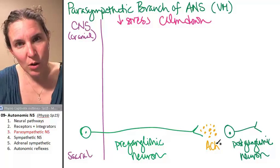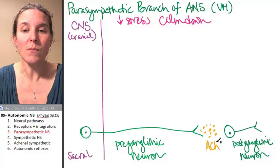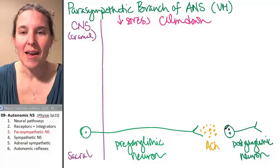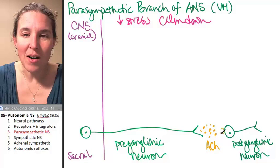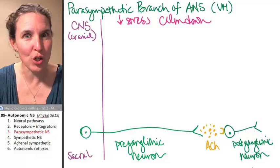So if we're dumping acetylcholine onto our postganglionic neuron, then we have to have acetylcholine receptors, yes? And what do you remember about acetylcholine receptors? We have two flavors.